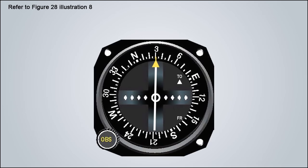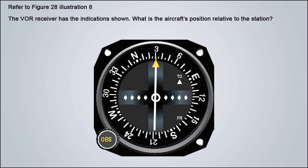Another much easier question says: refer to figure 28, illustration 8. The VOR receiver has the indication shown. What is the aircraft position relative to the station? The answers are north, east, or south. To answer this, first look at the flag — it's pointing straight up. Then look at the needle — it's centered. This means our heading to the station is exactly 030, north-north-east. If we need to fly north-north-east to reach the station, our position from the station is obviously the reciprocal: south-south-west or 210. Looking at the answers, there is no south-south-west, we're surely not east, and definitely not north — the only answer left is south.